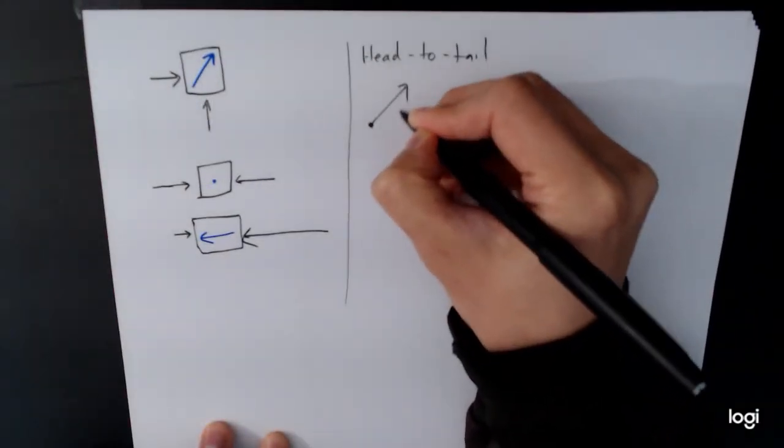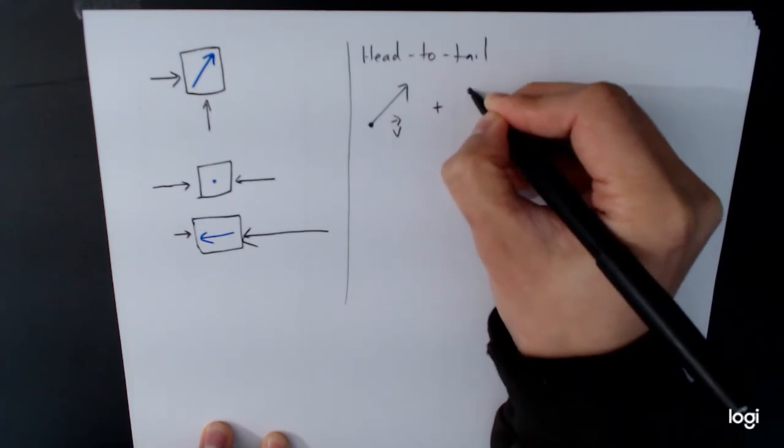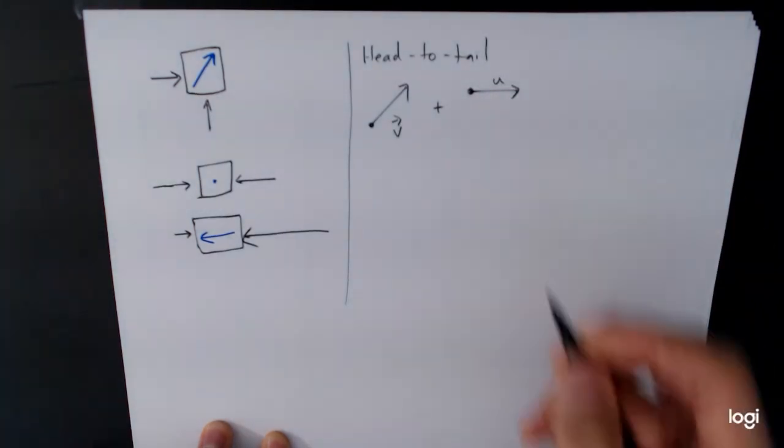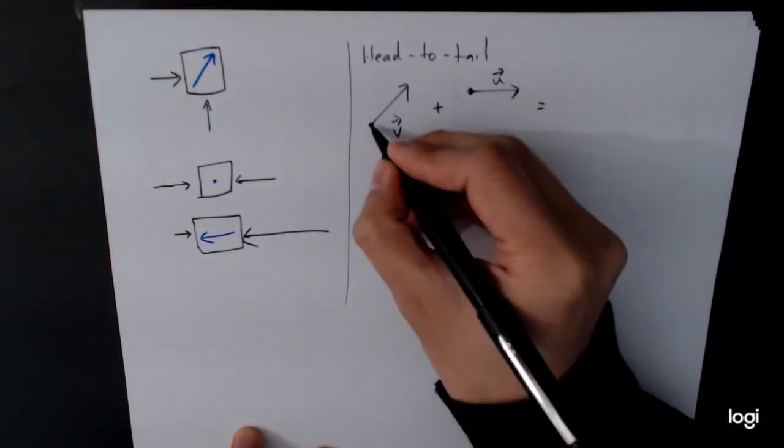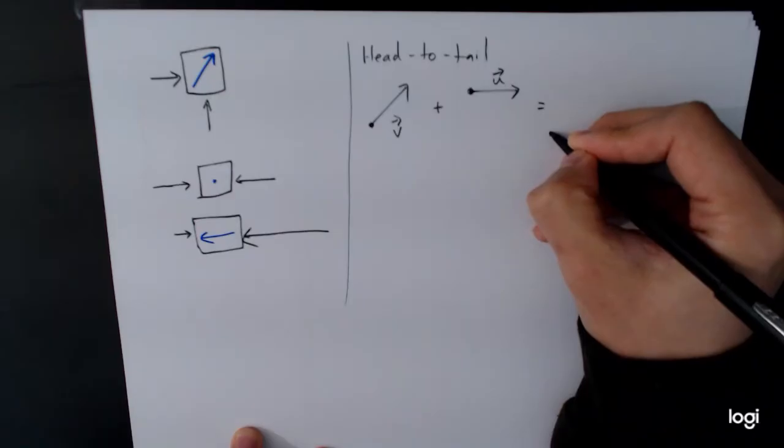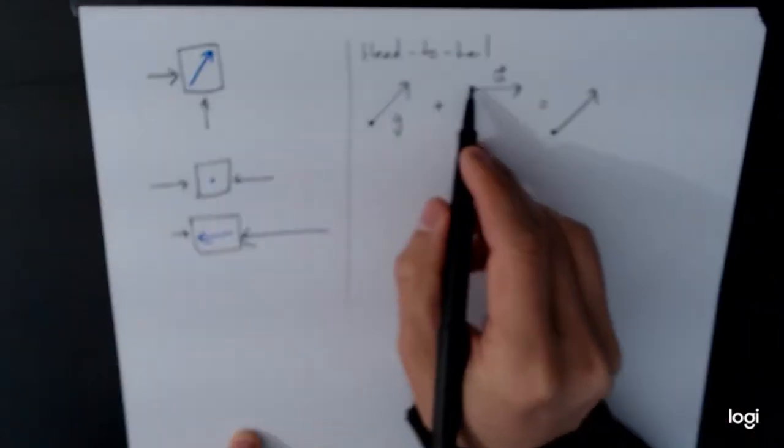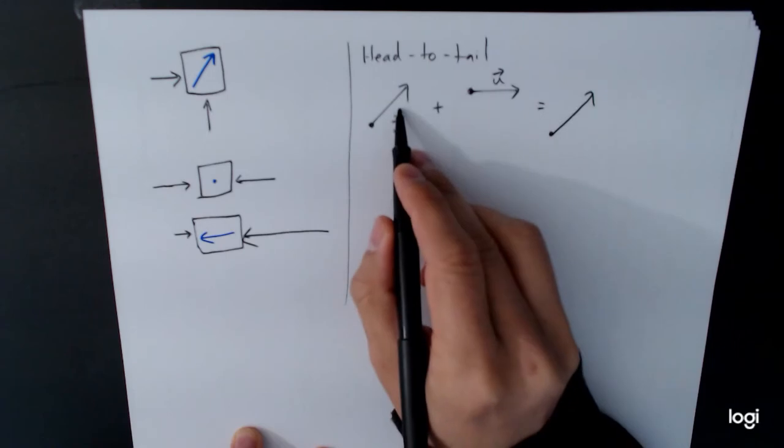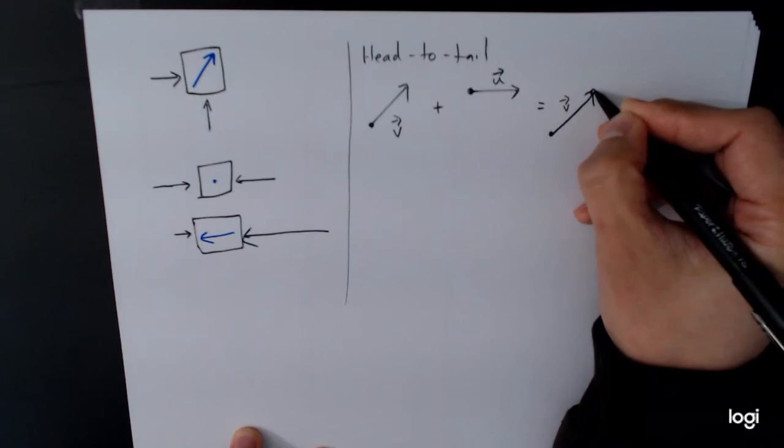What does that mean? So let's say I have a vector v and I'm going to add it to a vector u. What is the result going to be? The result is going to be, we'll start with the vector v and then we'll put the head of v to the tail of u. So here's v, u goes like this.